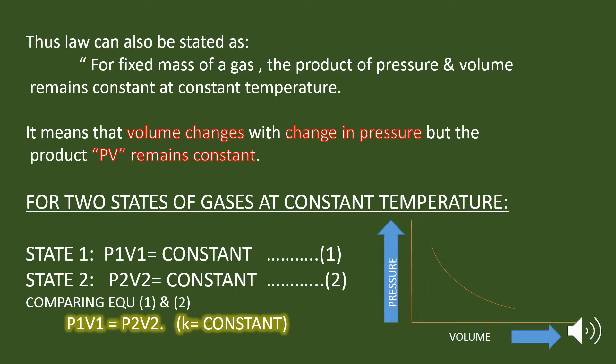This law can also be stated as: for a fixed mass of a gas, the product of the pressure and the volume remains constant at a constant temperature. It means that the volume changes with the change in the pressure, but the product, that is PV, remains constant.